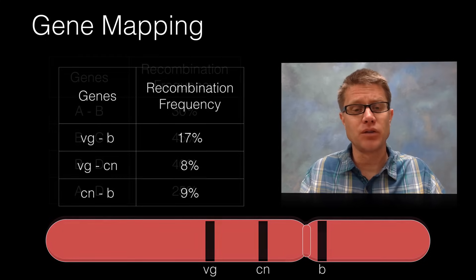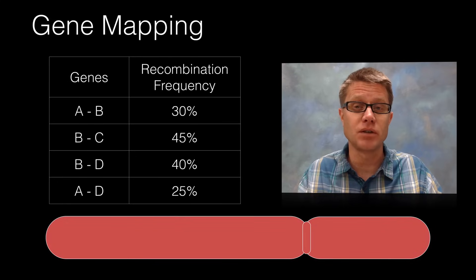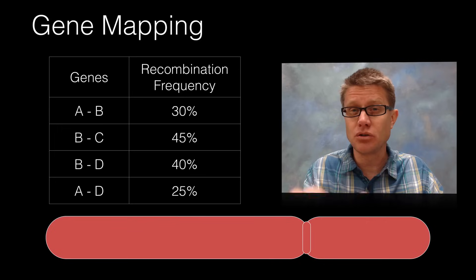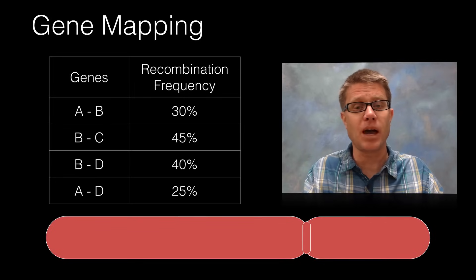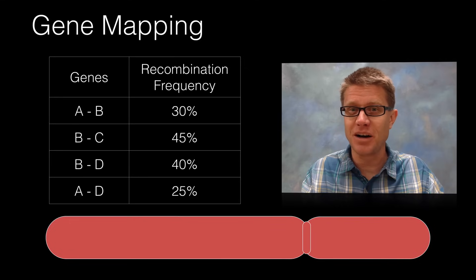Now let me give you a problem of your own. So now I've given you these four genes and their frequency of recombination. I would encourage you to pause the video here and then you try to map out where each of those genes are found on the chromosome. I'll pause.